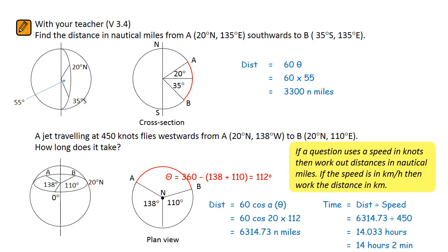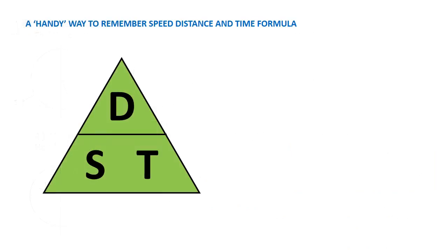And one last thing to show here, because I know that some students have difficulty in remembering speed, distance and time formulas. This triangle summarises three different formulas. Now the triangle itself is easy to remember, because it occurs in alphabetical order.